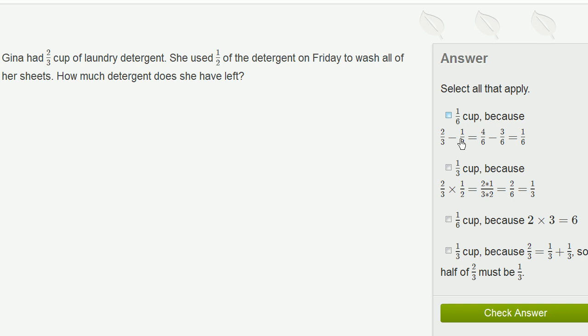Well, here they're taking 2 thirds minus 1 half, so this isn't going to be right. Here they're going to be taking, let's see, 1 third, because 2 thirds times 1 half, this is exactly what we want to do. We want to take half of 2 thirds.